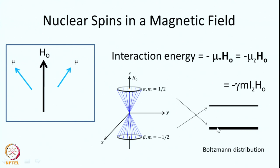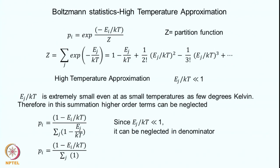The spins are distributed between the two energy levels according to Boltzmann statistics. The probability that a nuclear spin is in state i is given by exponential minus E_i over kT, divided by the partition function Z. Z is defined as the summation of exponential minus E_j over kT, where j runs over all 2I plus 1 states.